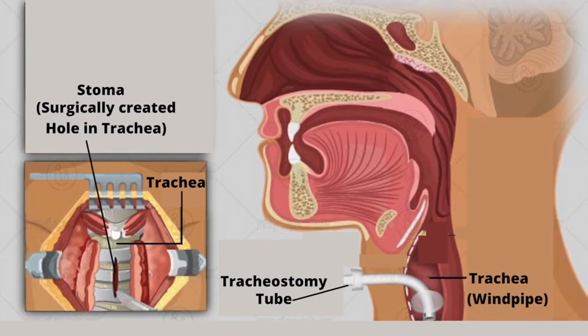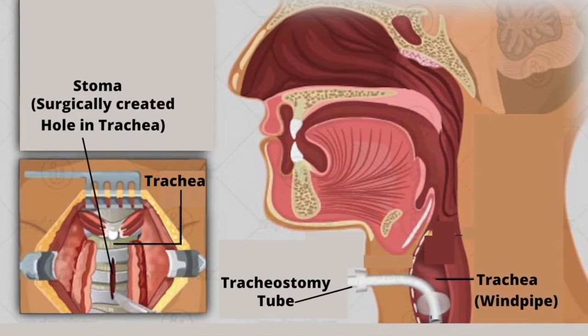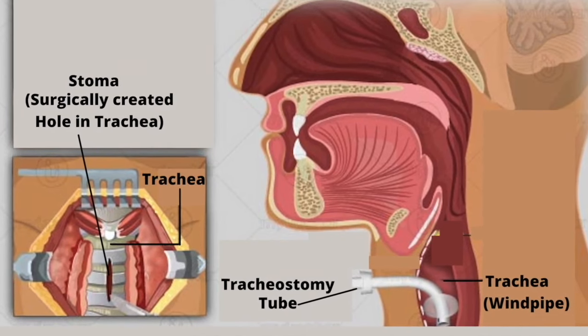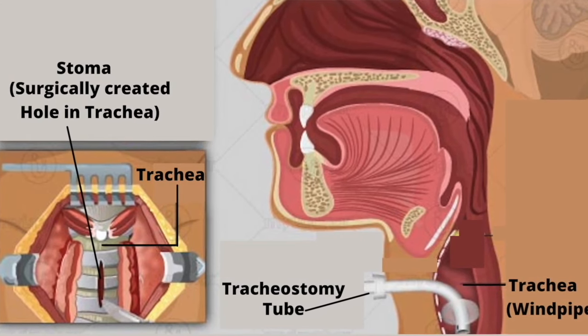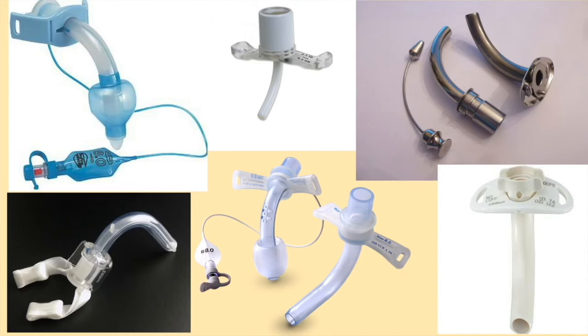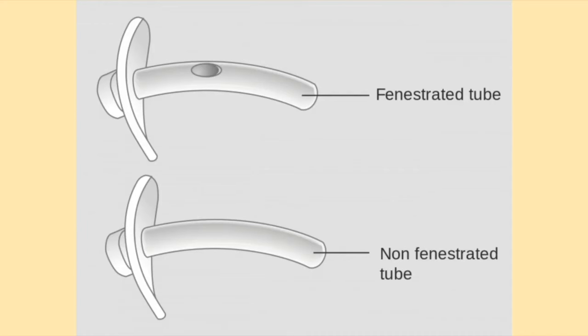A tracheostomy tube is an artificial airway which bypasses a person's upper airway. The tracheostomy tube is inserted directly into the trachea by a surgically created hole called the stoma. Tracheostomy tubes can be made from several different types of material and can come in various styles. One key feature which differentiates tracheostomy tubes into two distinct groups is the presence or absence of holes in the shaft. Join me this week as I discuss what the difference is between fenestrated and non-fenestrated tracheostomy tubes.